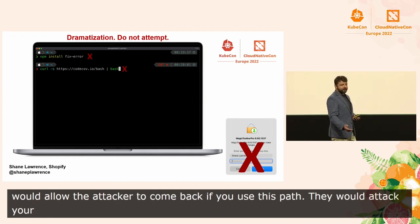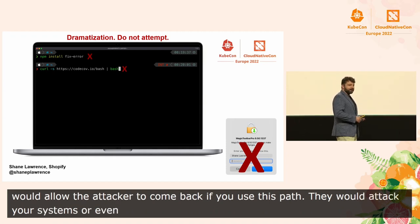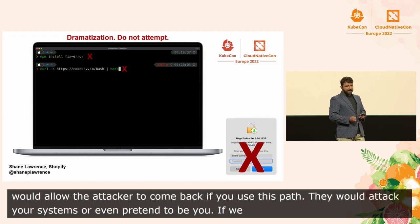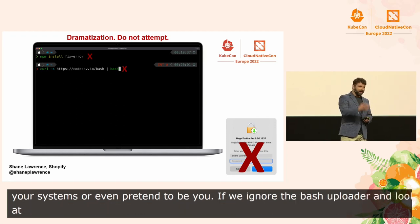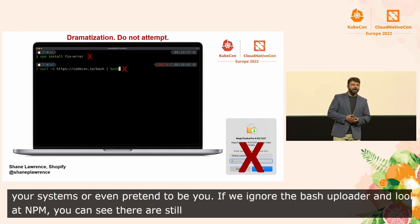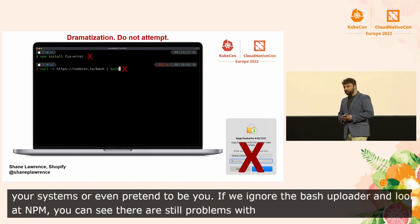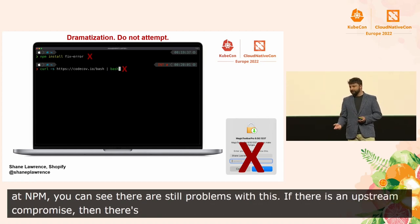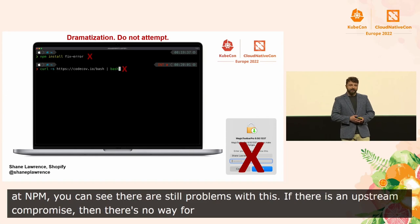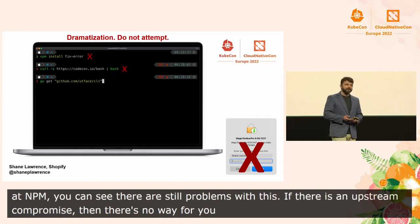This information would allow the attacker to come back — if you use this particular path, the infamous Codecov bash uploader — and they would exfiltrate all of your environment variables. They could attack your systems or even impersonate you using the secrets that were stored in your build environment. If we ignore the bash uploader and just look at npm, you can see that there are still problems. If there is an upstream compromise, then there's no way for you to change it. As soon as you run this code on your production systems, you're compromised.